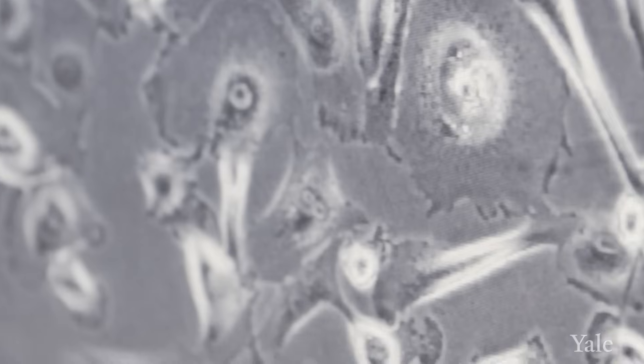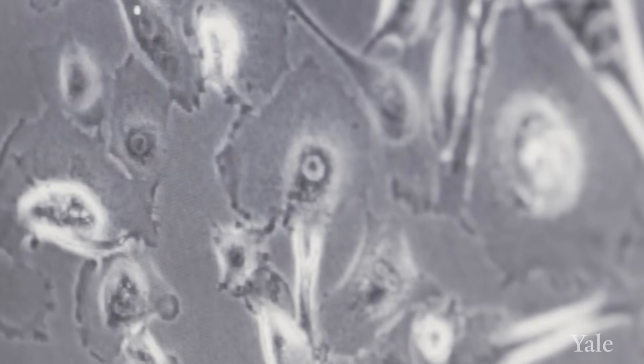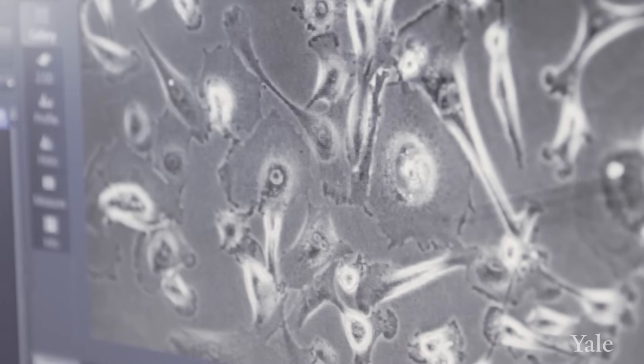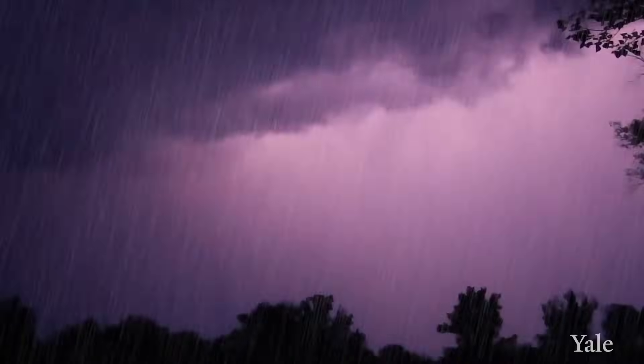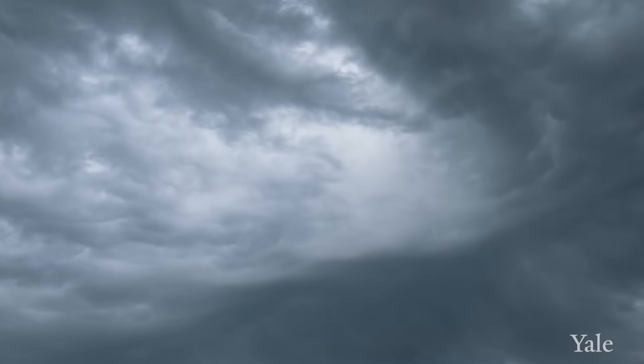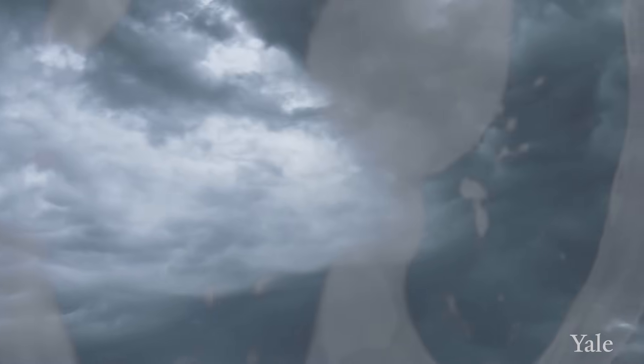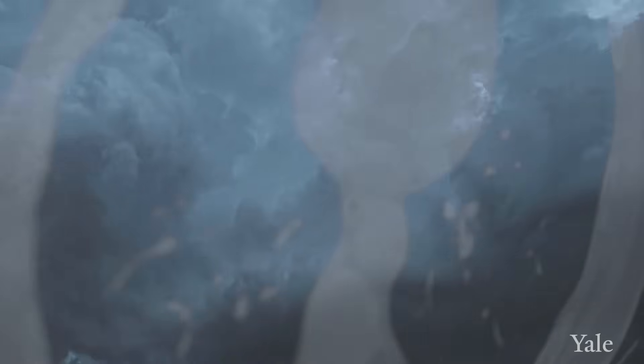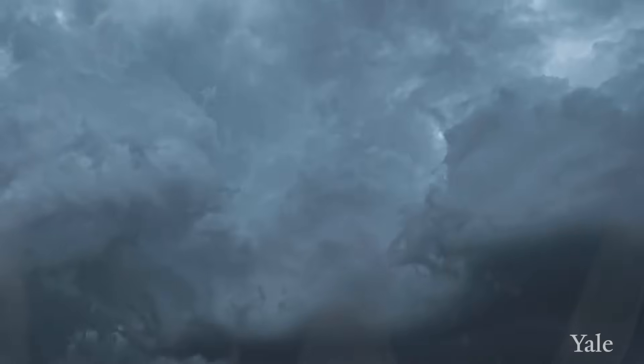We have non-small cell and small cell lung cancer, and that purely describes what the cells look like under the microscope. The small cell cancers tend to be ones that are more aggressive. They grow faster. They do have a typical pattern when we look at the CT scan that might make us think about small cell as opposed to non-small cell.